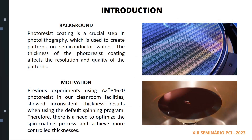As background for this study, we must acknowledge that photoresist coating is a crucial step in photolithography, and as such, the thickness of the photoresist coating affects the resolution and quality of the patterns to be transferred. In our cleanroom facilities, we use AZP4620 photoresist, which is a positive tone photoresist that becomes soluble when exposed to UV light. However, we found that the default spinning program for this photoresist gave us inconsistent thickness results. Therefore, we decided to optimize the spin coating process and achieve more controlled thicknesses.